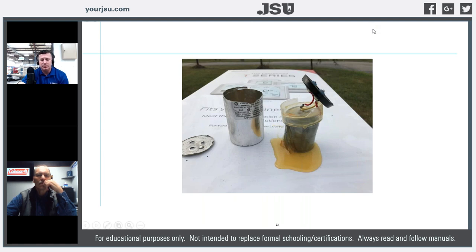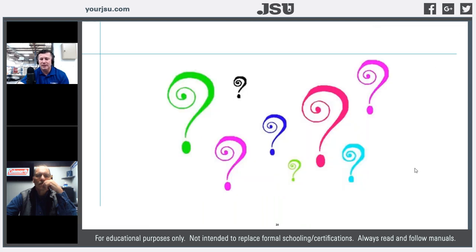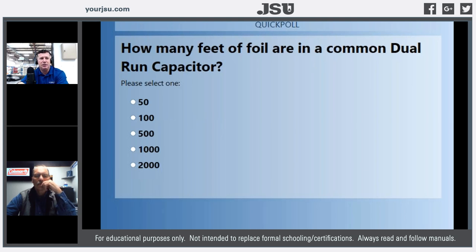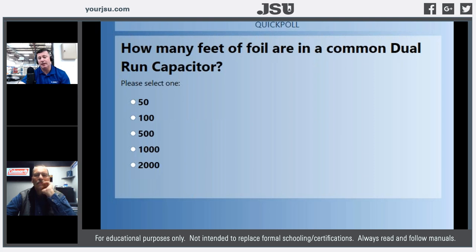We were looking at a 50+5 capacitor from this class earlier in the summer — a poll question: how many feet of foil are inside a typical dual run capacitor? Microfarads are determined by the surface area of the film; the more microfarads, the more surface area and running feet of film. So a 50+5 is going to have a lot of film in it.